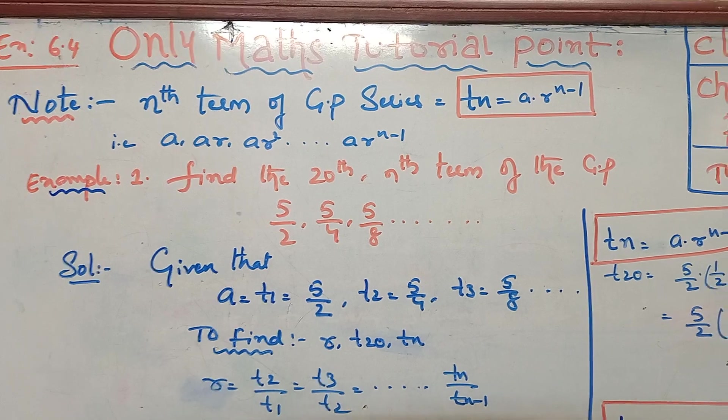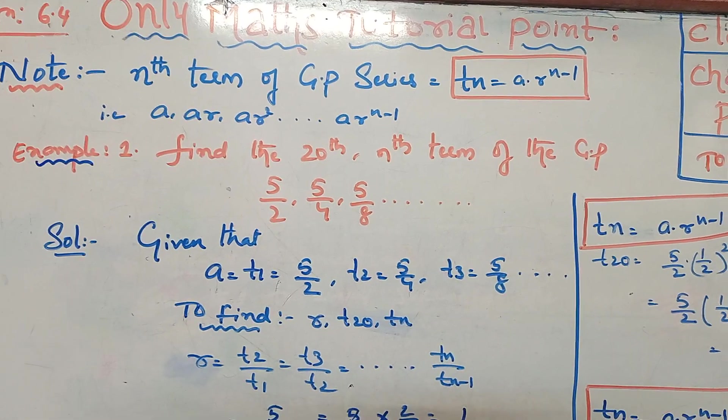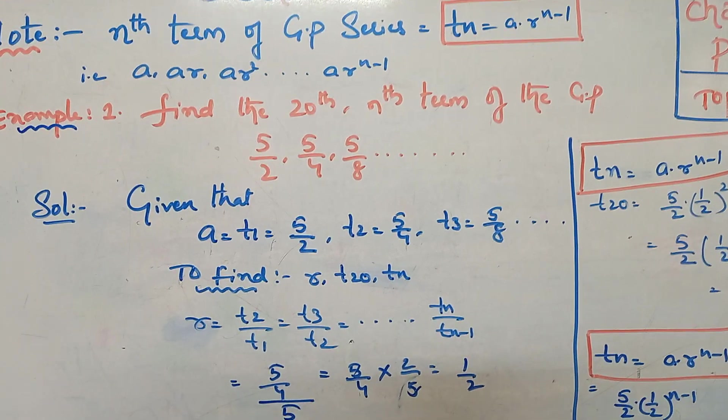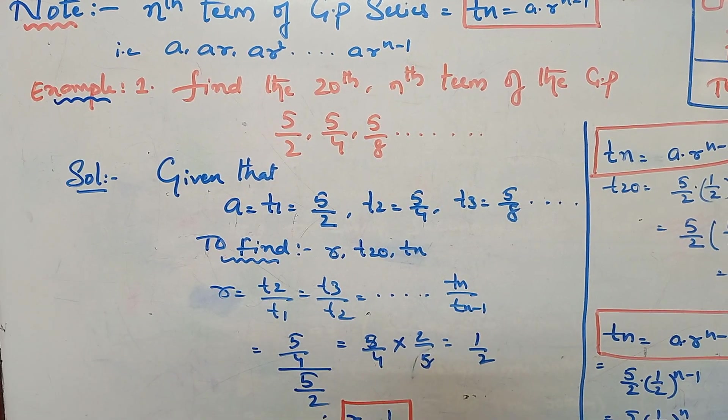So we solve with an example. Find the 20th and nth term of the GP. What is the given series here? 5 by 2, 5 by 4, and 5 by 8. First, try it out.